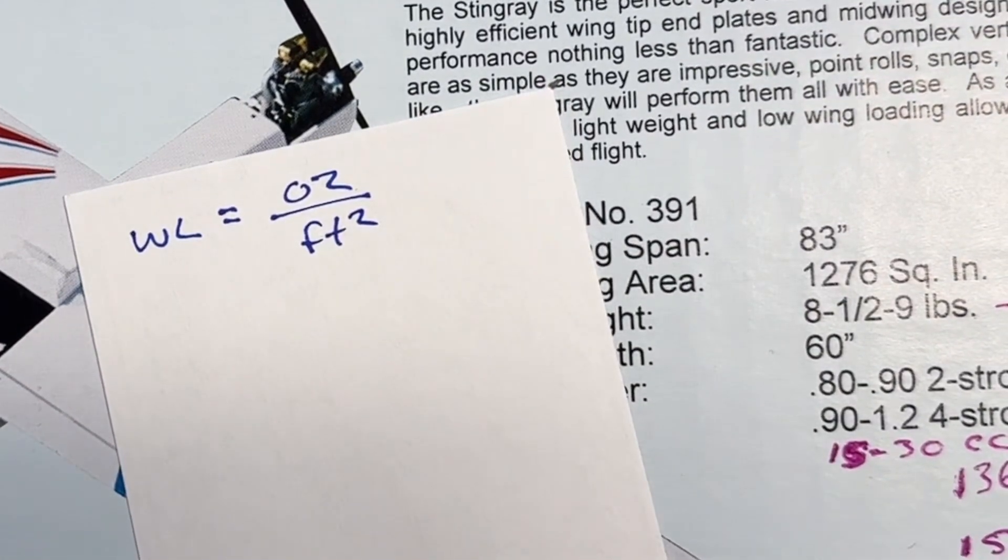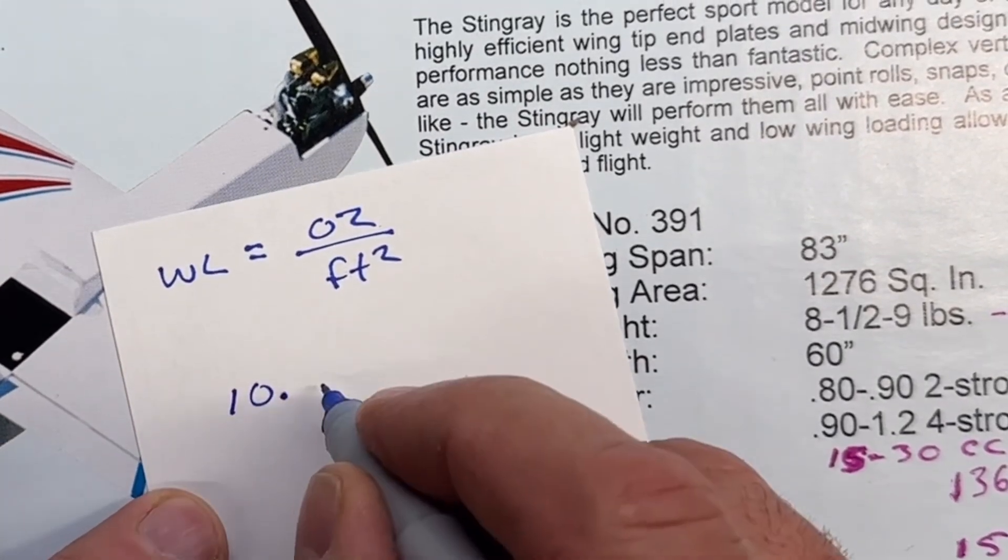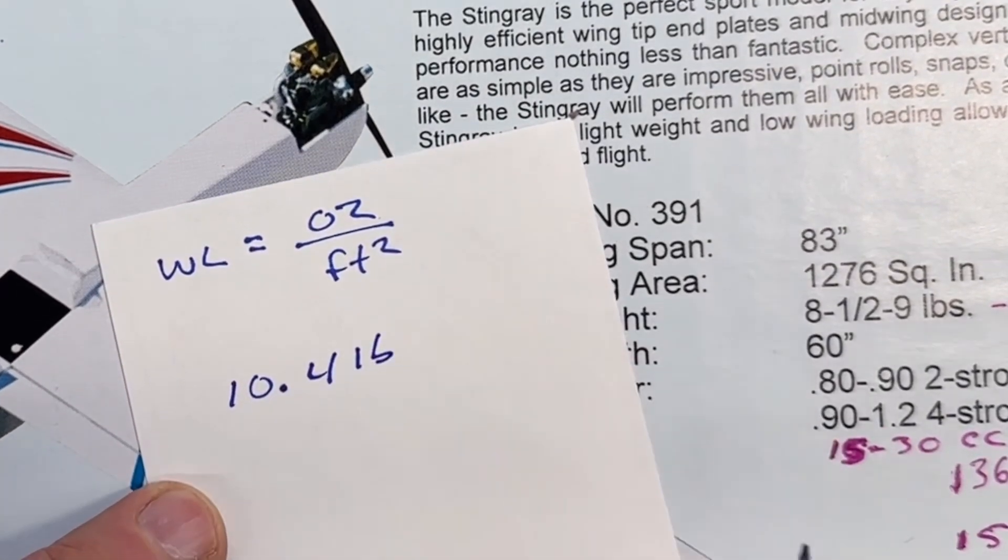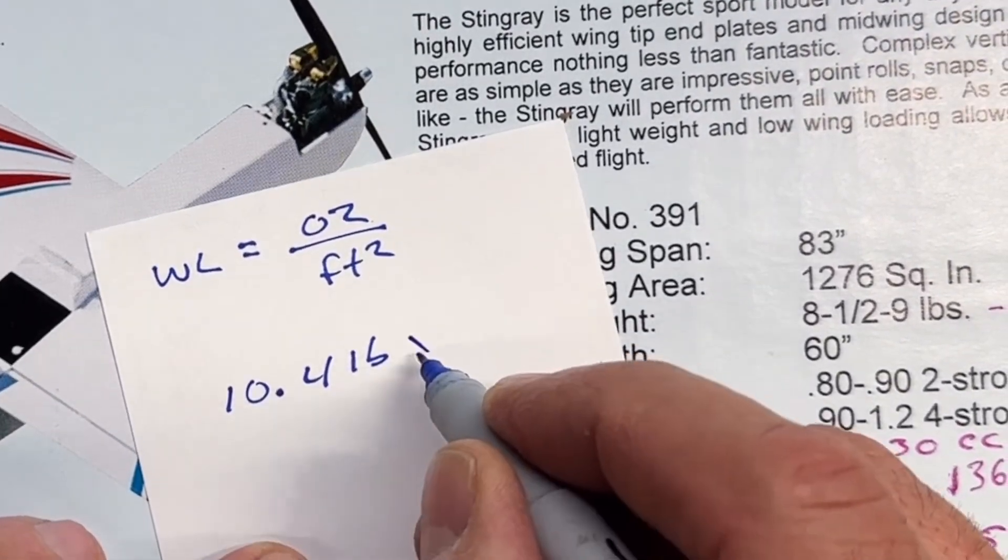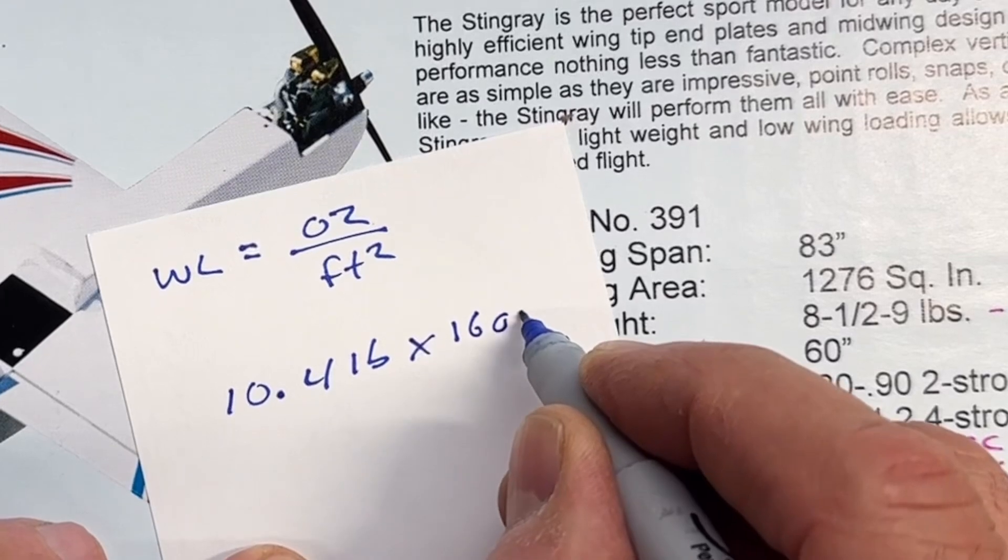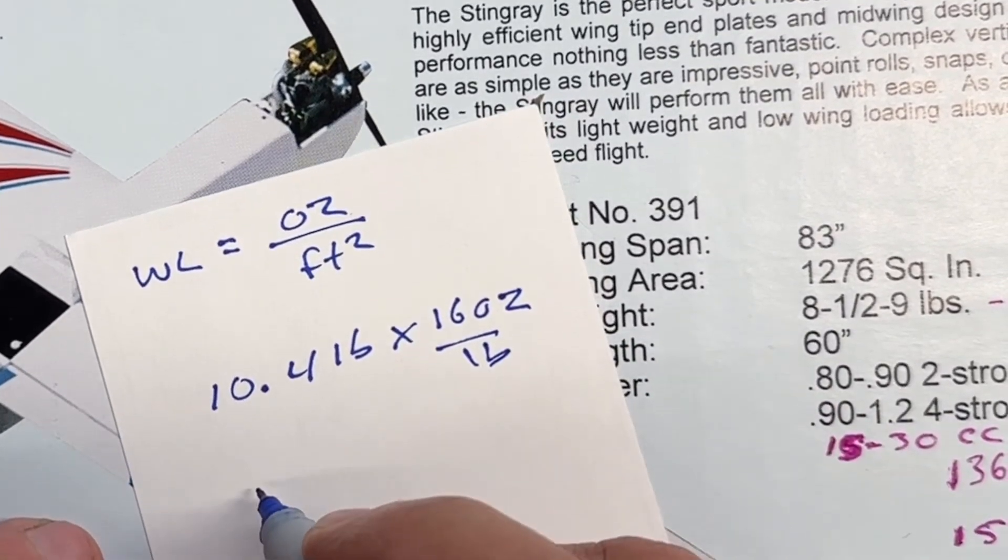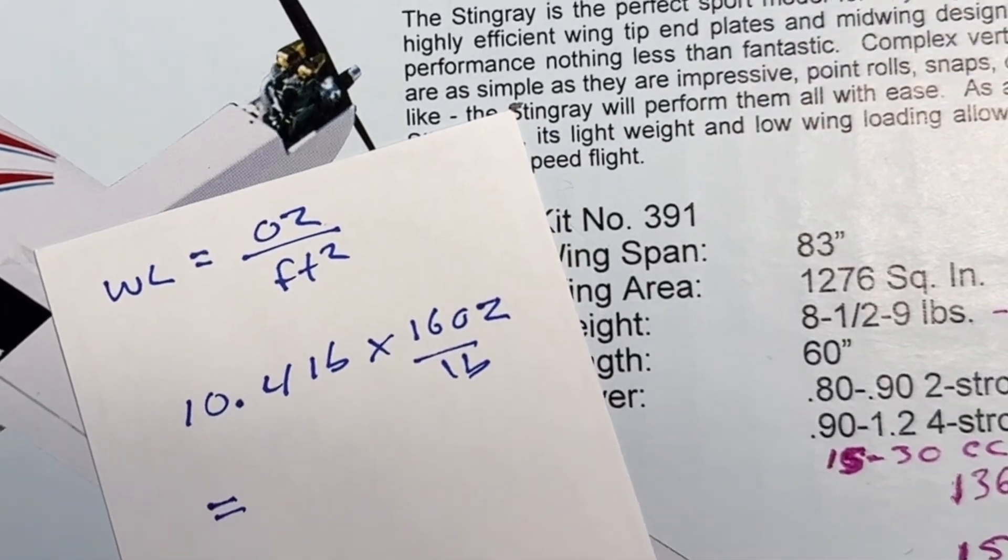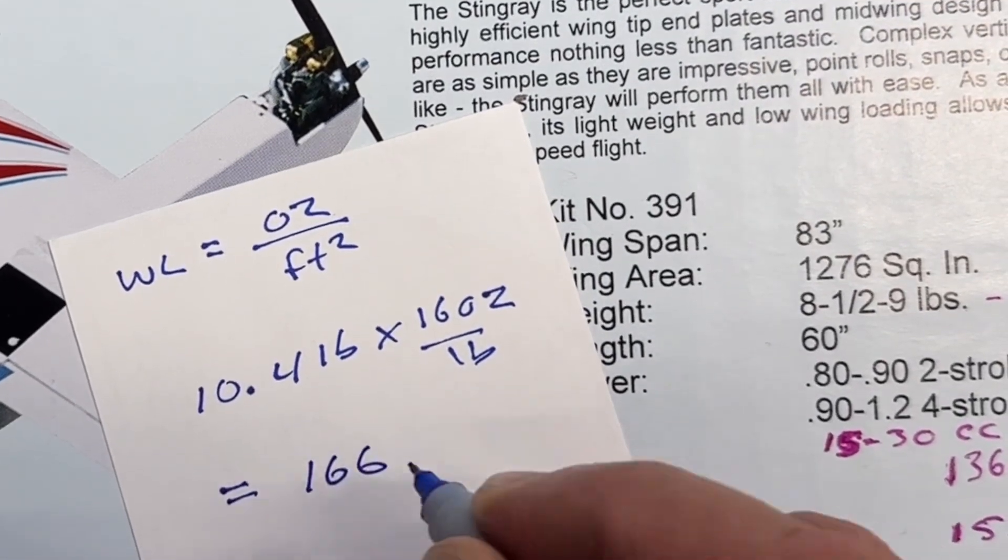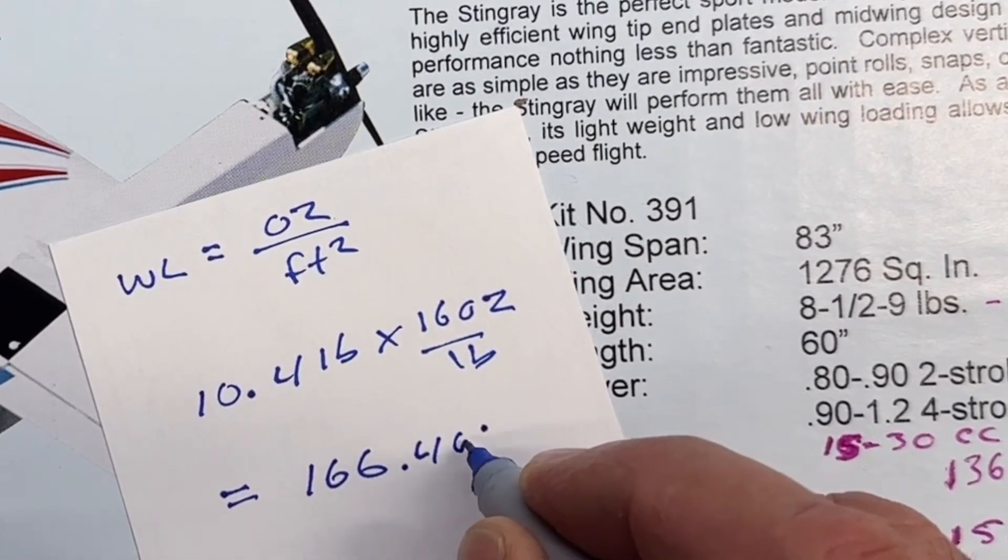So the weight of the airplane that I just measured was 10.4 pounds. So I'm going to convert that to ounces. So we're going to multiply that by 16 ounces per pound. And that equals, I already did the math on this, equals 166.4 ounces.